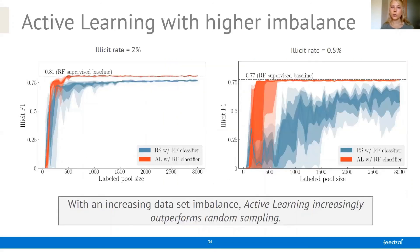So we looked at active learning if we have an illicit rate of 2% or 0.5%. And we can see that at the illicit rate of 2% versus 0.5%, we can see that active learning in red increasingly outperforms random sampling in blue. So we can conclude that with an increasing data set imbalance, which is much more realistic in a practical setting, active learning, so using much more sophisticated strategies than random sampling, increasingly outperforms it.